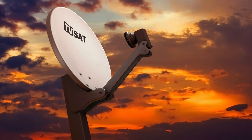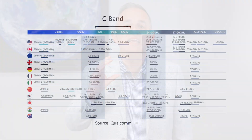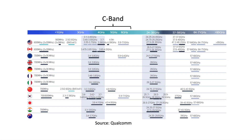C-Band has found a new home with the advent of 5G and 6G mobile systems. This figure shows international wireless community adoption of C-Band as a major frequency range for 5G deployments.